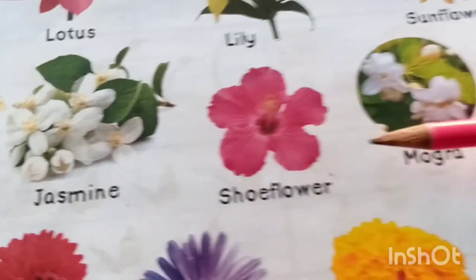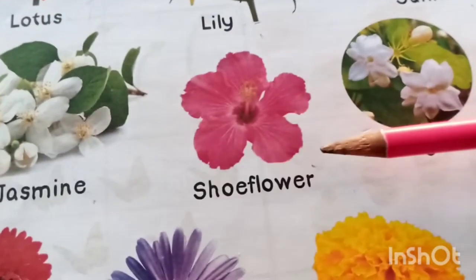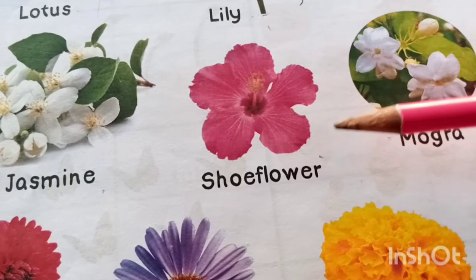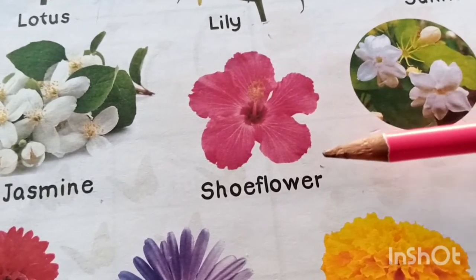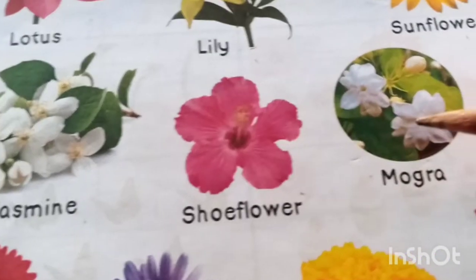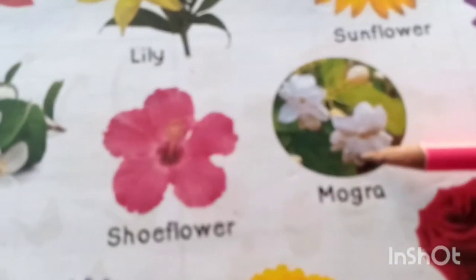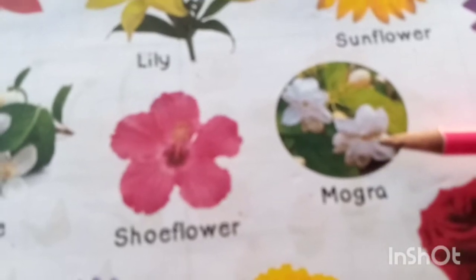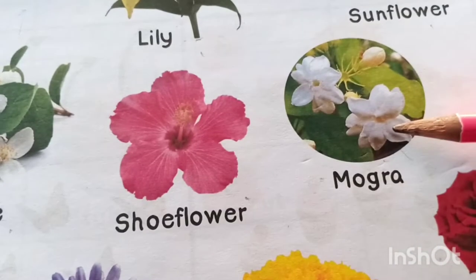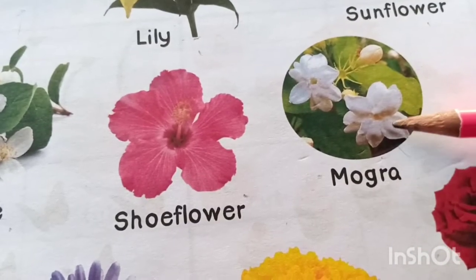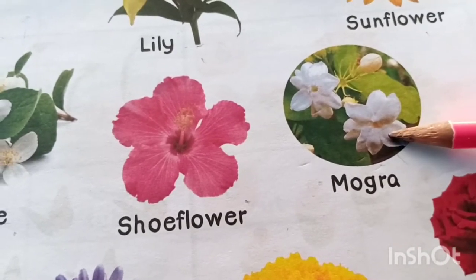What is this? This is sunflower. What is this? This is mogra.